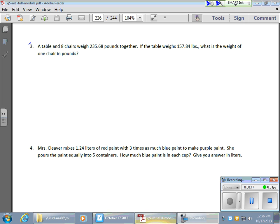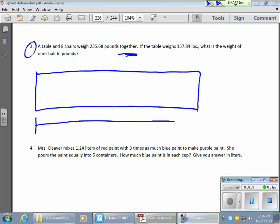So let's focus on problem number three. In problem number three, we have a table and we have eight chairs. Together that weighs 235.68 pounds. Well, that whole together deal, that gives me a big signal as to what I need to do. I need nine different items. Nine different items are going to total a weight of 235.68 pounds.